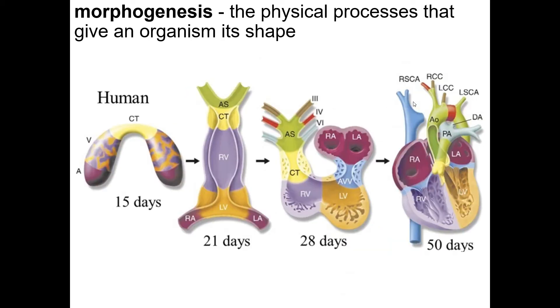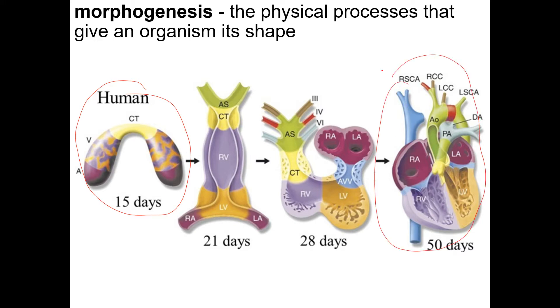Morphogenesis is the physical process that gives an organism its shape. For example, the heart is going to start like this, and then the cells kind of move around and rearrange each other until finally you get a four-chambered heart.